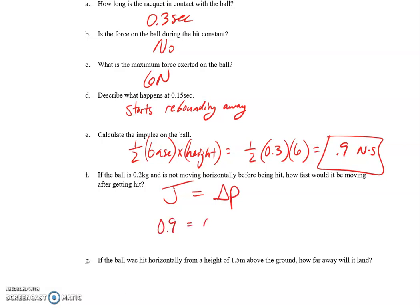Change in momentum is m delta v. So 0.9 equals mass, final velocity minus initial velocity, which would be 0 because it was not moving before being hit. So divide by 0.2, and you get a final velocity of 4.5.